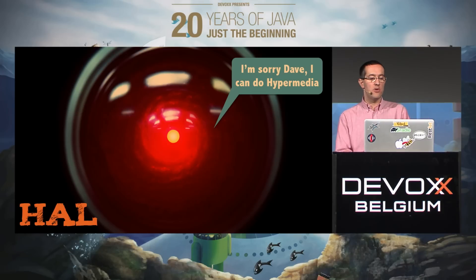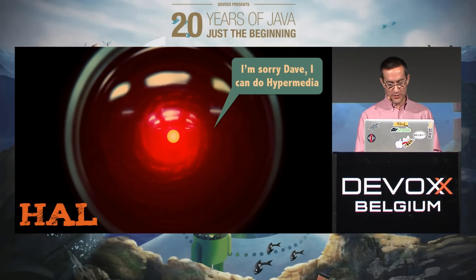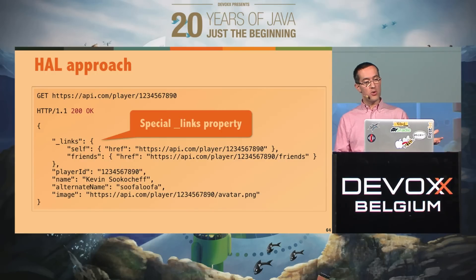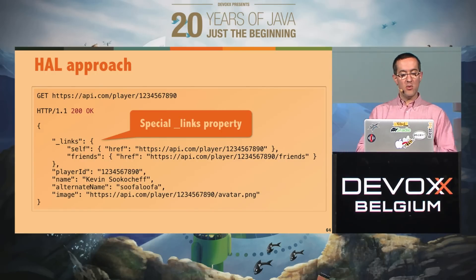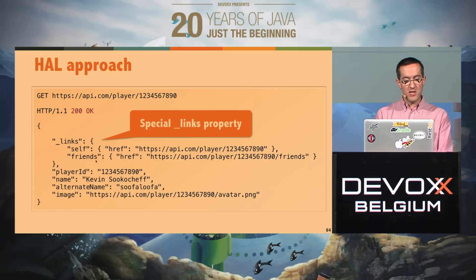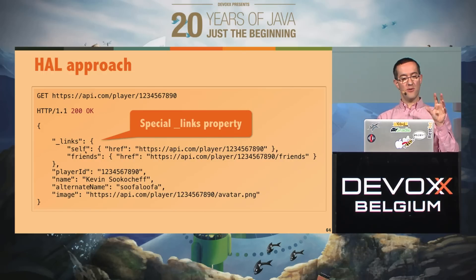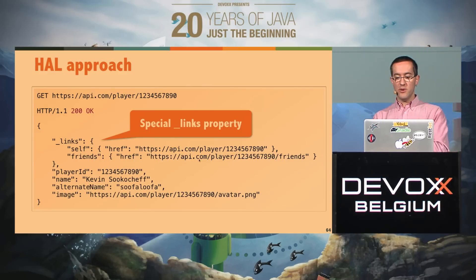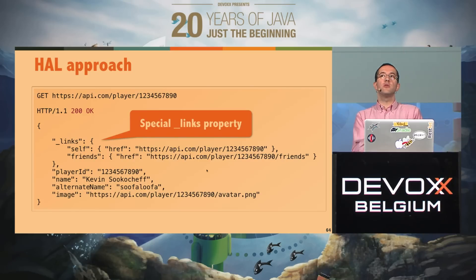Here's one example of hypermedia with HAL. Let's say I'm looking at a player. There's a special '_links' property where you define the links. There's a 'self' link pointing at the current resource, and you can also define links to related resources — like the friends of that player — with the full URL so you can easily navigate. There's more to HAL than just that, but if you want to follow one approach for hypermedia in your API, you could use HAL.